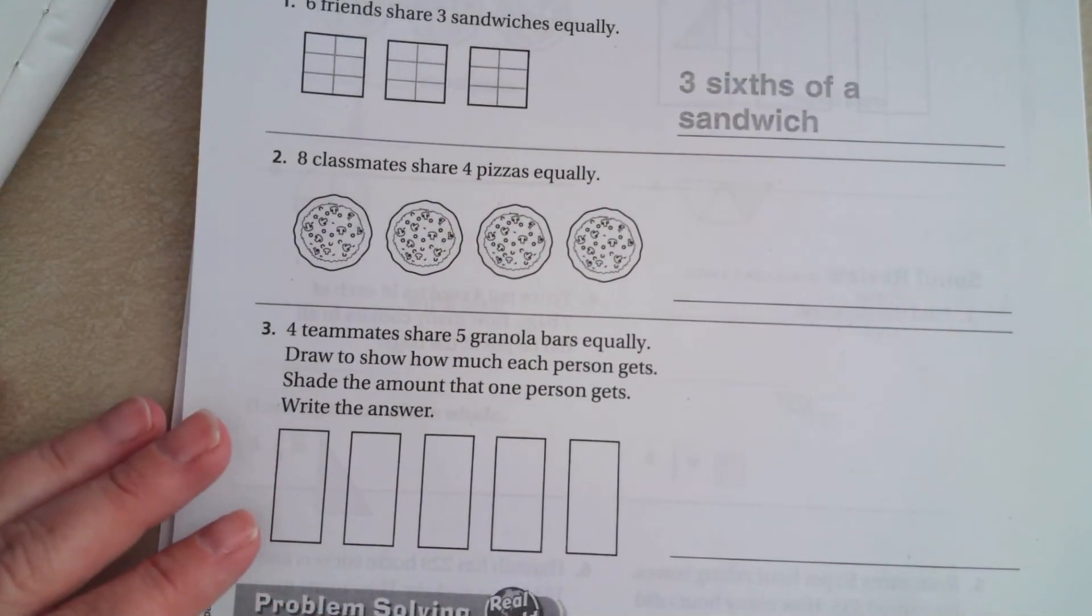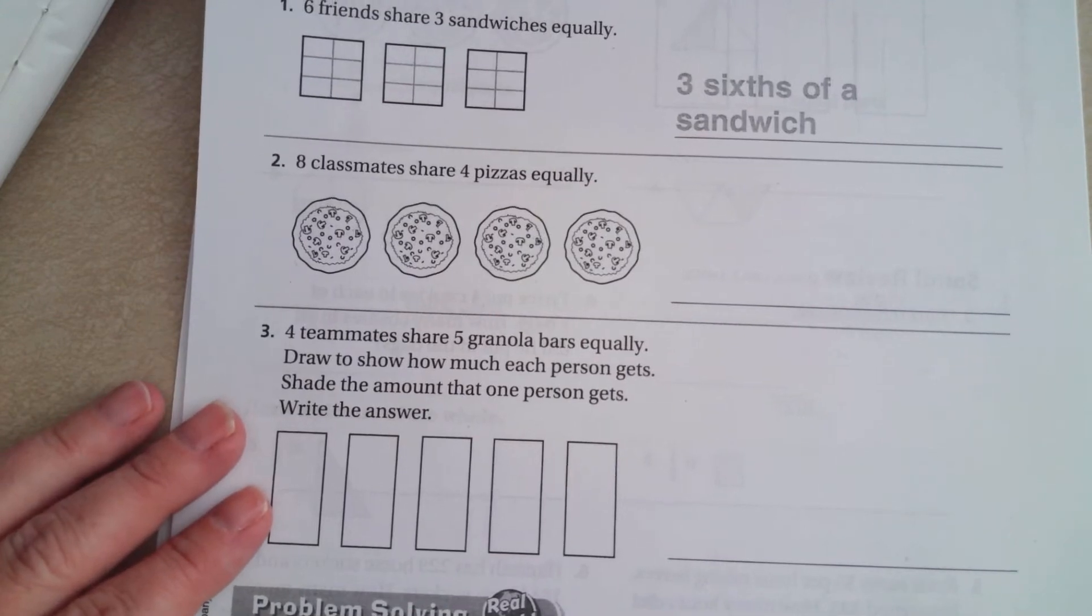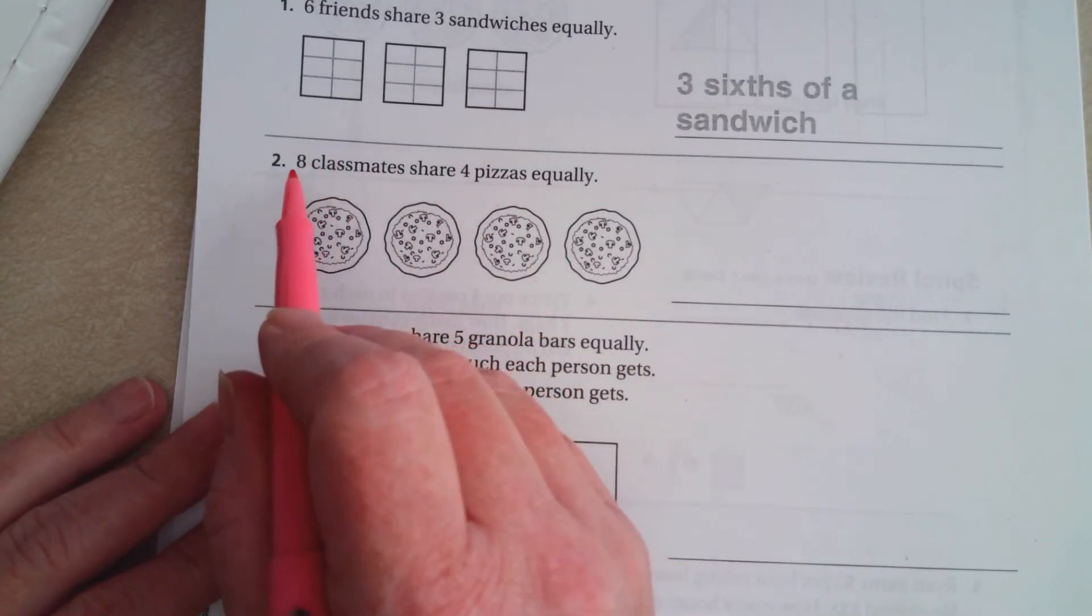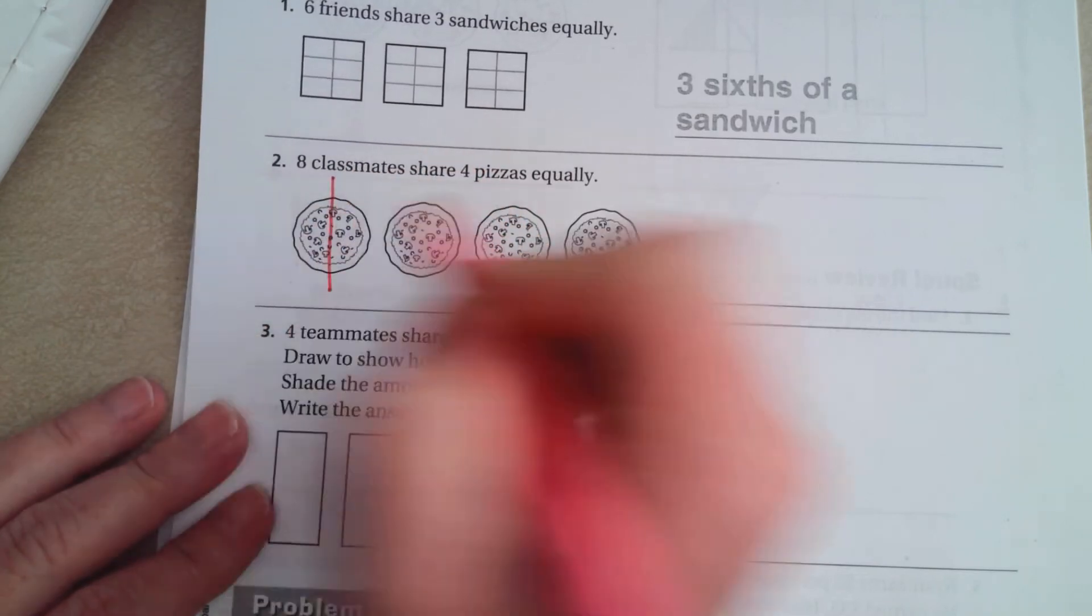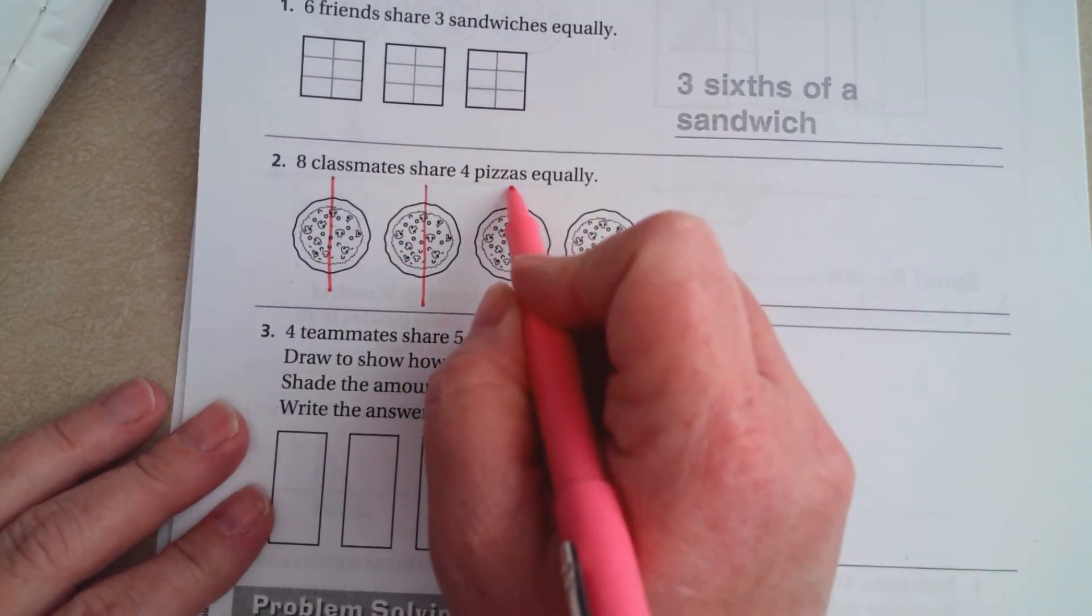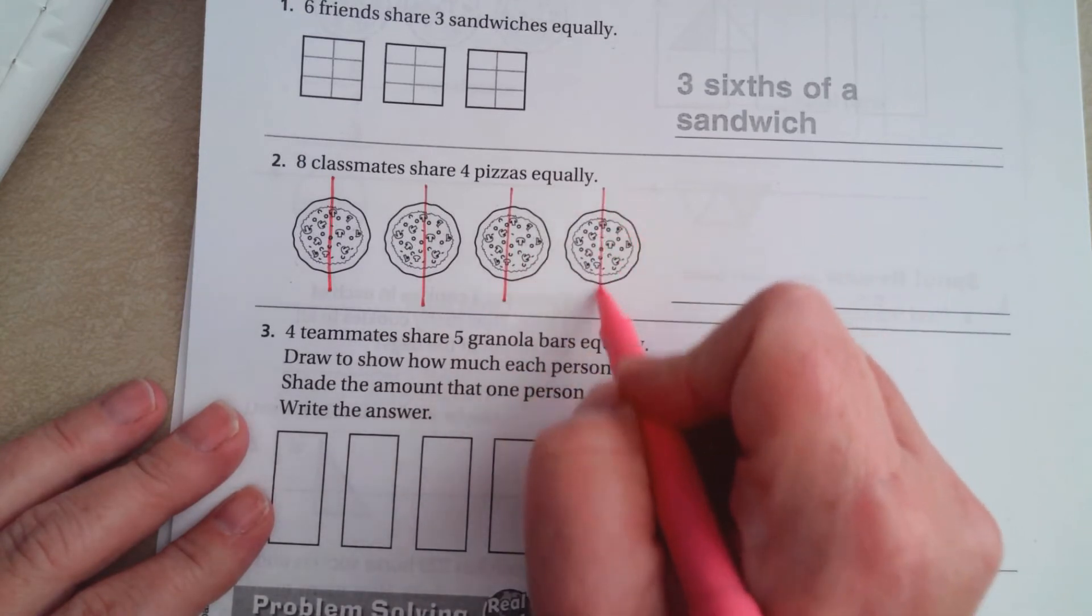8 classmates share 4 pizzas equally. So, we're going to draw lines to cut these to where 4 becomes 8. Now, I have 5, 6, 7, 8.